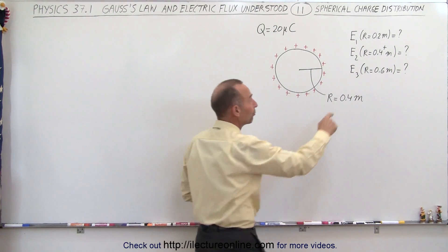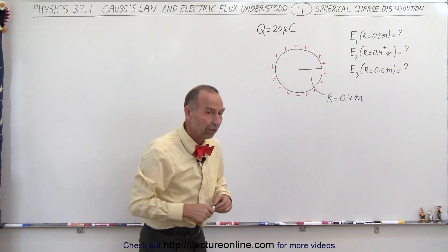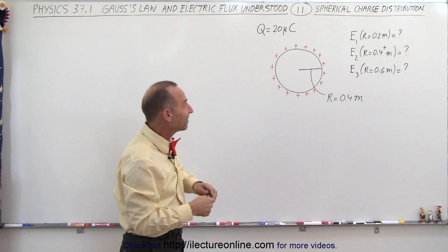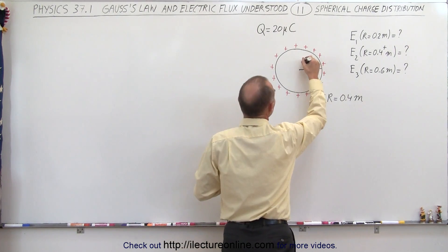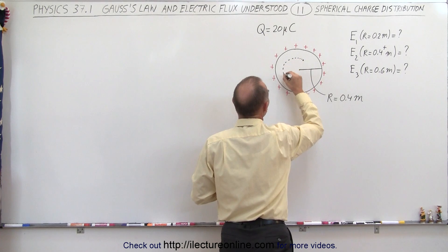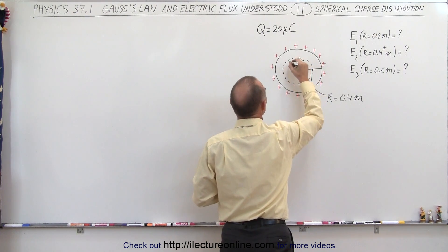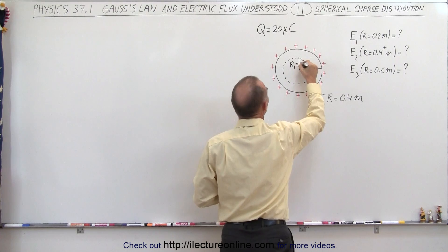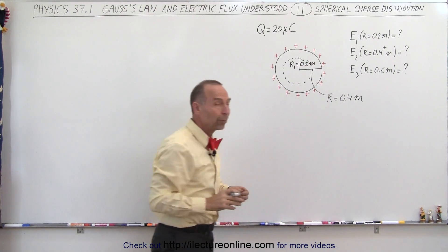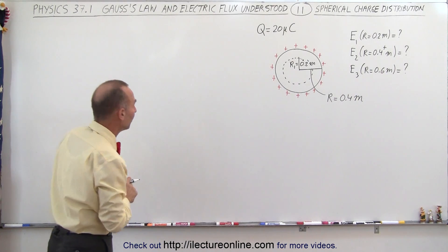The 0.4-plus means just outside the surface of the conductor. At 0.2 meters, the point is inside the conductor, somewhere about here. So we're going to draw a Gaussian surface where the radius, let's call it R1, is equal to 0.2 meters. We're going to use Gauss's Law to find the electric field at that location.